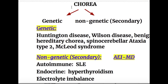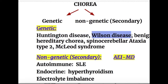Chorea may be genetic or non-genetic (secondary). Genetic causes of chorea include Huntington's disease (Huntington's chorea), Wilson's disease, benign hereditary chorea, spinocerebellar ataxia type 2, and McLeod syndrome.